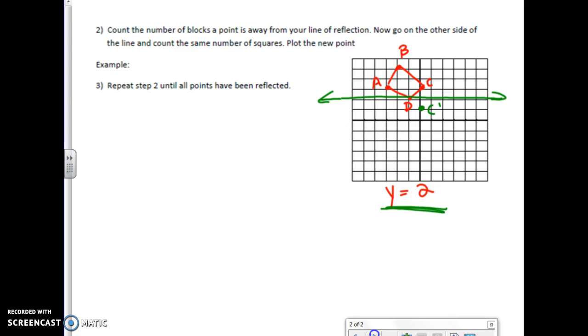B is 1, 2, 3 away from the line of reflection. So I'm going to go 1, 2, 3 the opposite way. And then A is 1 point down, so I'm going to go 1 point down the other way. I am putting a prime after them just to reflect that it's the new image.